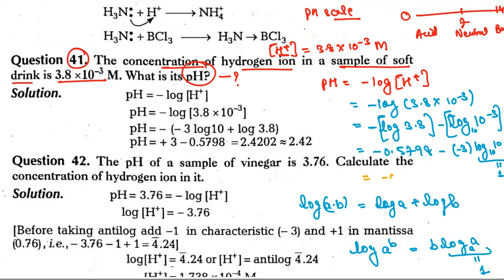So we have -log(3.8) - 3, which is -0.579 - 3. The minus and minus become plus, so it's -0.579 + 3. When you calculate this, you get 2.4202, which is approximately 2.42.